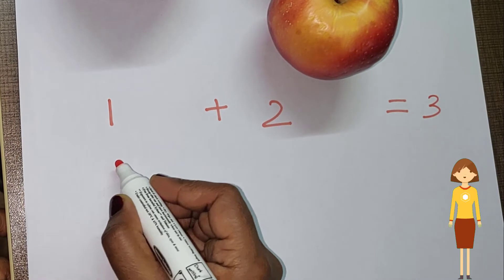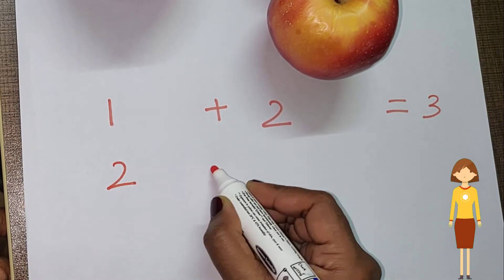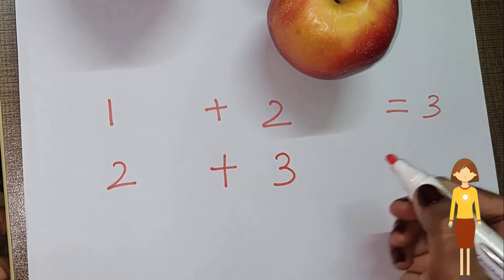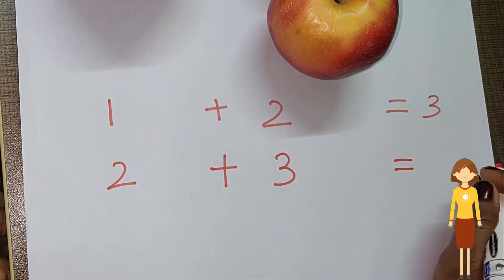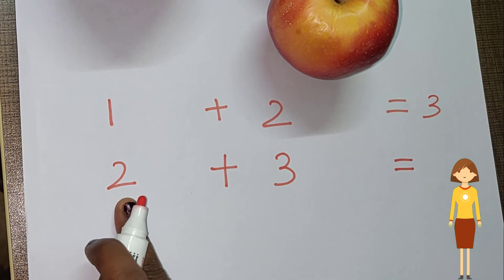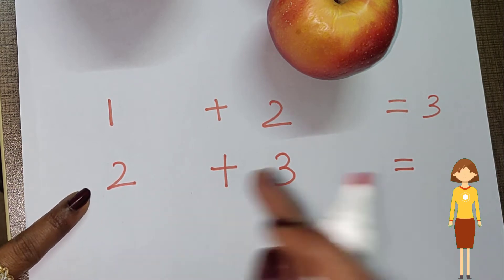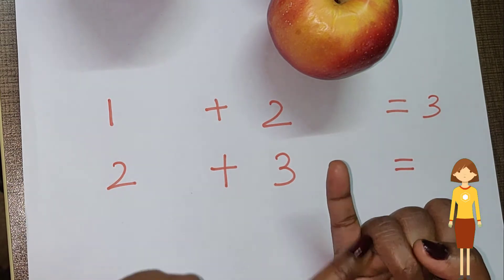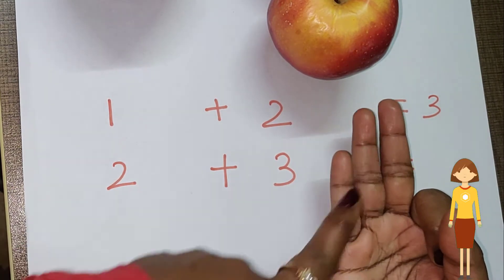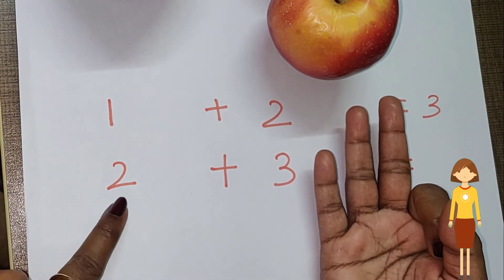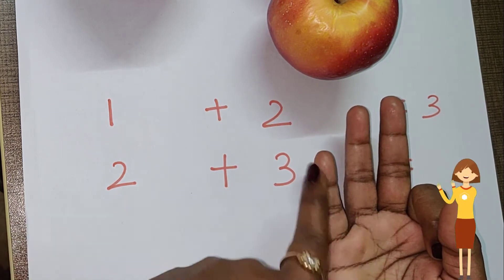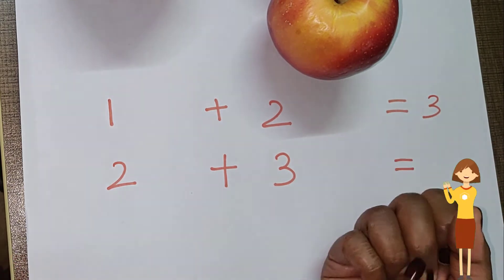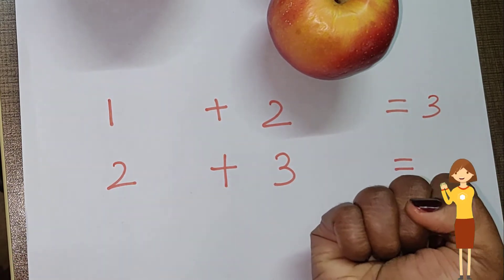Let me give you one more problem. Two plus three is equal to dash. Two in the mind and three in the fingers. So one, two, three in fingers. And after two: three, four, five. The answer is five.